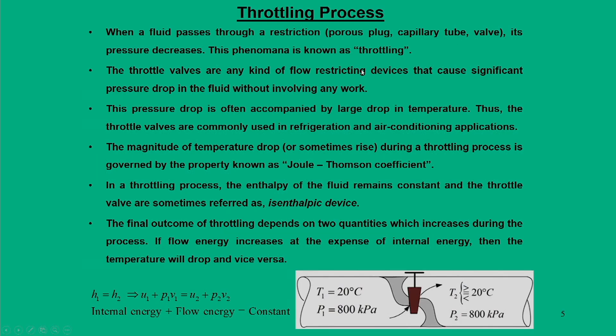When gas expands in a turbine the pressure also decreases, but we do not call that throttling — we call it work output. The basic consideration is that during gas expansion in a turbine it is an isentropic process, which is a reversible adiabatic process. In throttling, we reduce the pressure, but the key question is: at what cost and what parameter remains constant?